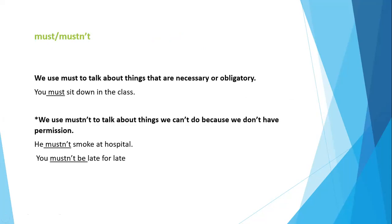Now let's move to 'must'. We always use 'must' for rules. We use 'must' to talk about things that are necessary or obligatory, like: you must sit down in class because it's a rule. We also use 'must' to talk about things that we can't do because we don't have permission.